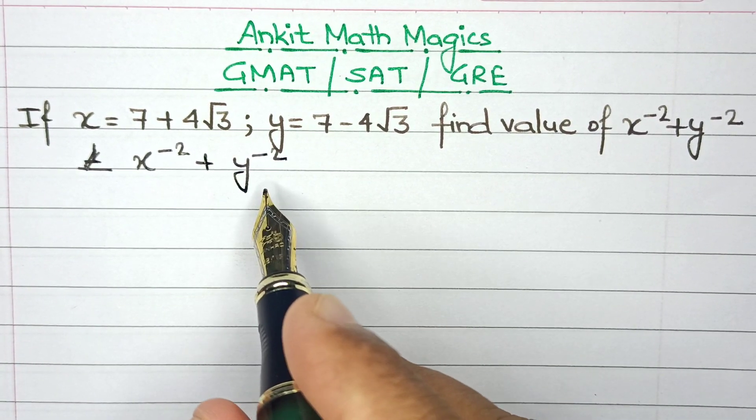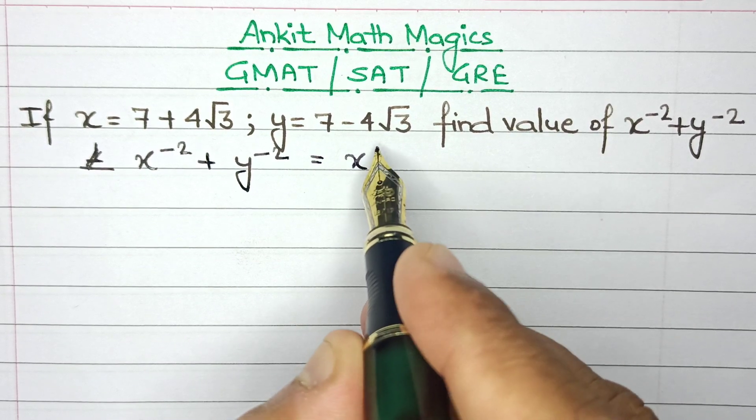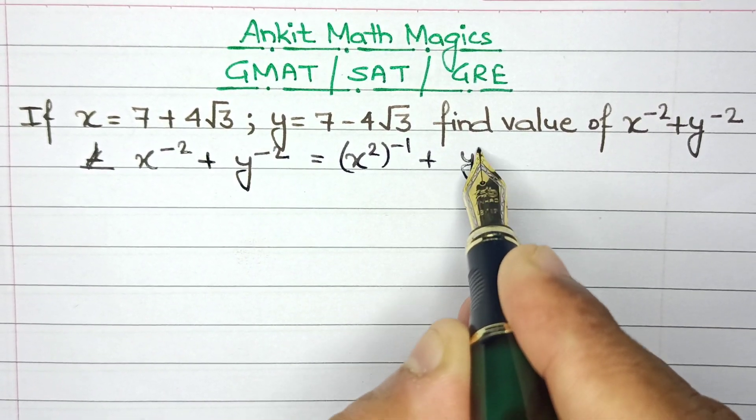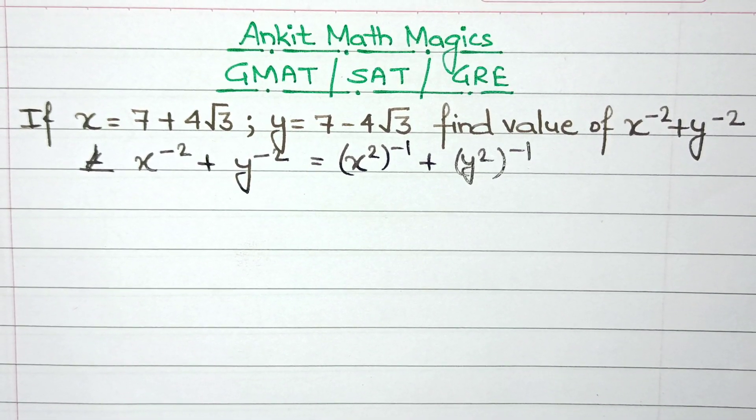Going by the rules of exponents and powers, this can be written as x square raised to the power minus 1 plus y square raised to the power of minus 1.